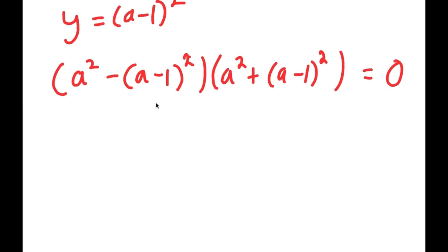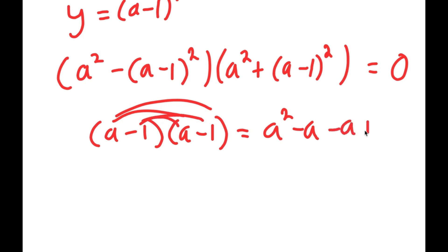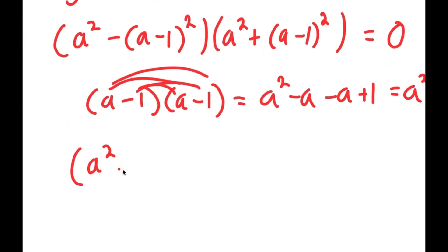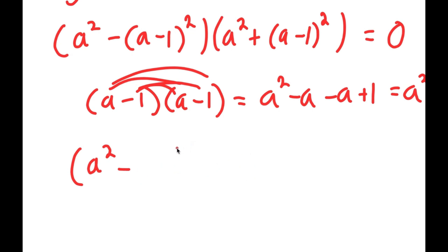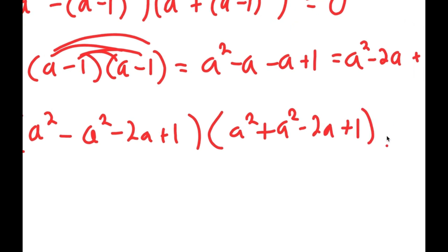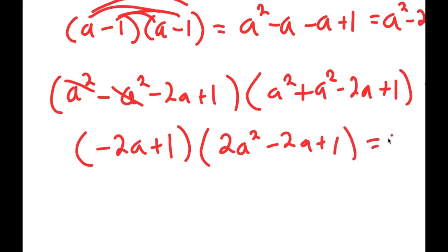Now I'm going to expand a minus 1 squared. A minus 1 squared is the same as a minus 1 times a minus 1. Distributing the a gives a squared minus a, and distributing the negative 1 gives minus a plus 1, which equals a squared minus 2a plus 1. So I get a squared minus (a squared minus 2a plus 1), times a squared plus (a squared minus 2a plus 1), equal to 0. The left factor simplifies to negative 2a plus 1, and the right factor becomes 2a squared minus 2a plus 1, equal to 0.